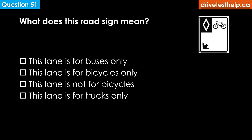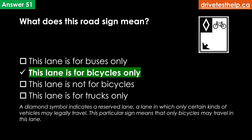What does this road sign mean? Options: this lane is for buses only; this lane is for bicycles only; this lane is not for bicycles; this lane is for trucks only. The correct answer is this lane is for bicycles only. A diamond symbol indicates a reserved lane — a lane in which only certain kinds of vehicles may legally travel. This particular sign means that only bicycles may travel in this lane.